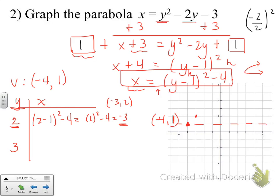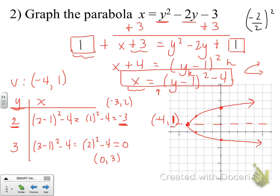Now I'll do the same with y equals 3. Plugging 3 in for y, I get 2 inside the parentheses. Squaring 2 gives 4, and 4 minus 4 is 0. The ordered pair I plot is (0, 3), right on the y-axis. Connecting those points, I have the top half of my parabola opening to the right. Using symmetry, I partner those points across the axis of symmetry to get the bottom half. There's our completed graph.